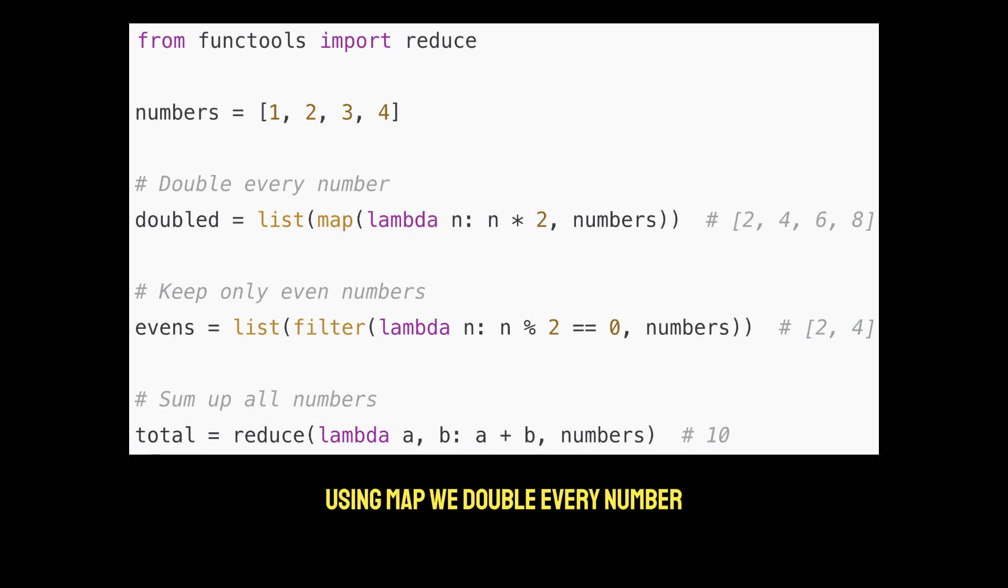Here's an example of each. Using map, we double every number. Using filter, we only keep even numbers. And using reduce, we sum up all numbers.